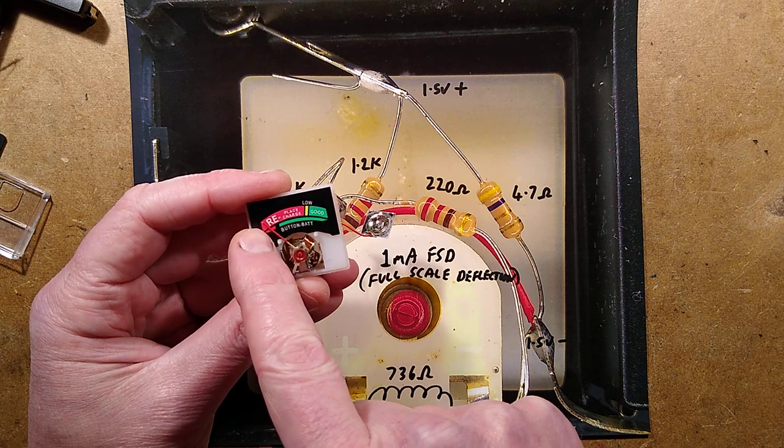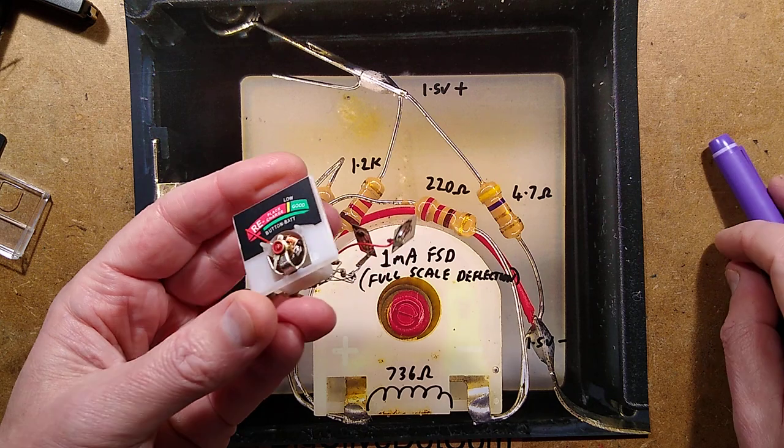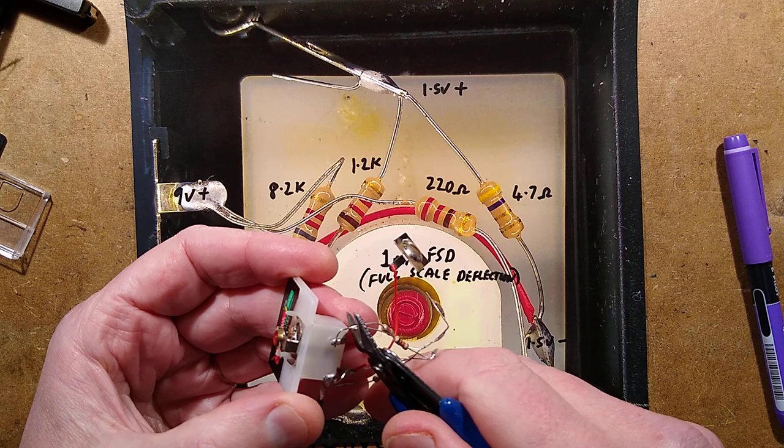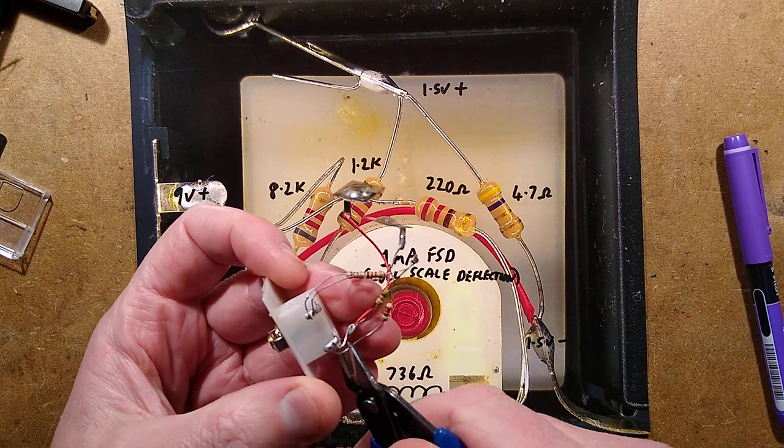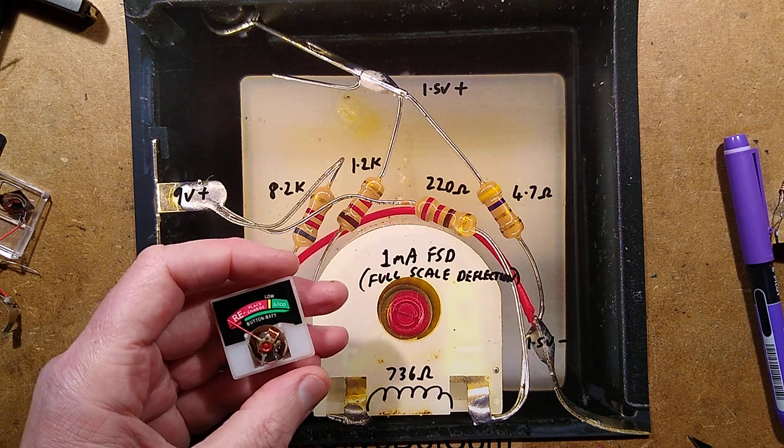What that means is that from here with zero current, if you pass 1 milliamp through it, it will deflect right up to the end. And I could potentially demonstrate that if I actually cut these resistors off. This thing is toast anyway. It's no longer going to be used because it's rubbish.